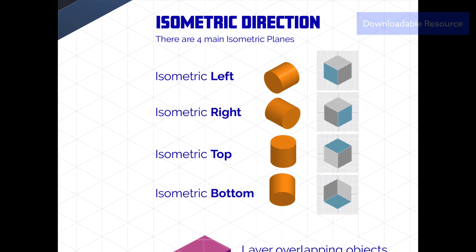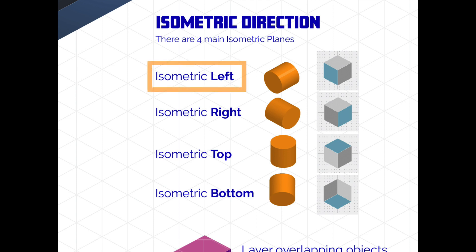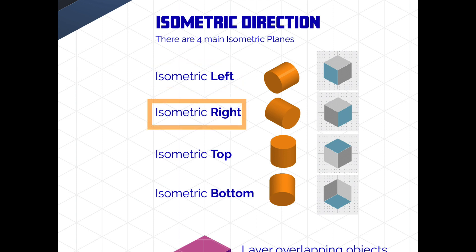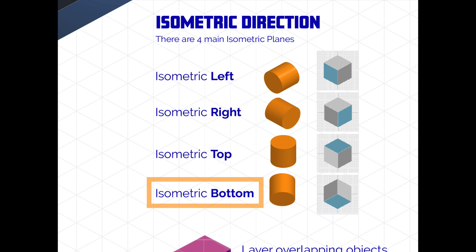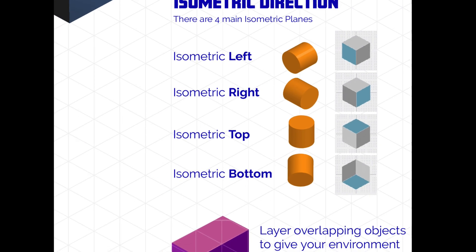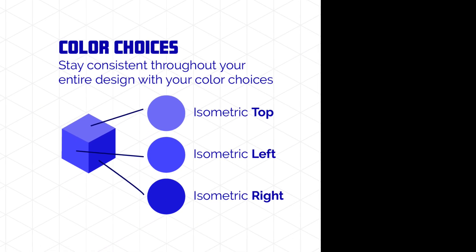Speaking of isometric planes, there are four of them: isometric left, which is everything facing the left part of your artboard; isometric right, which is the plane that faces rightward; isometric top, which is everything at the top plane; and lastly, isometric bottom, which is everything underneath.